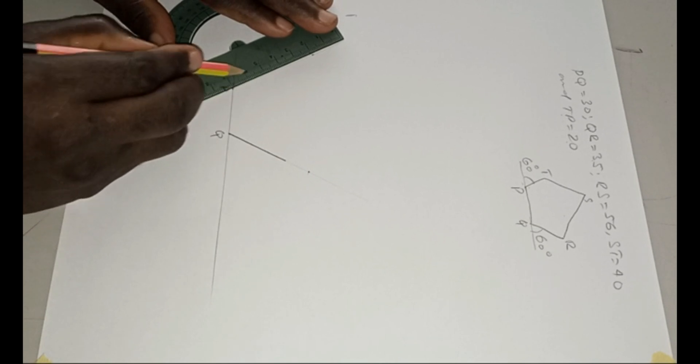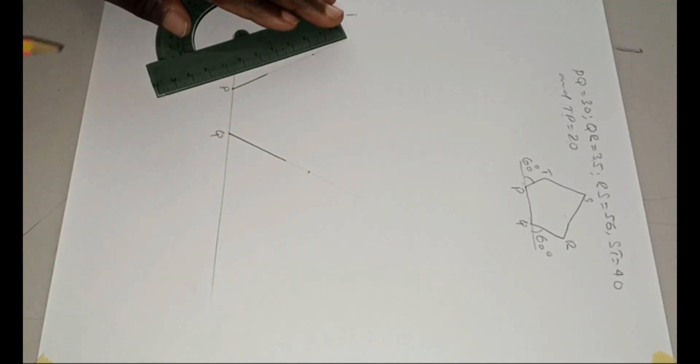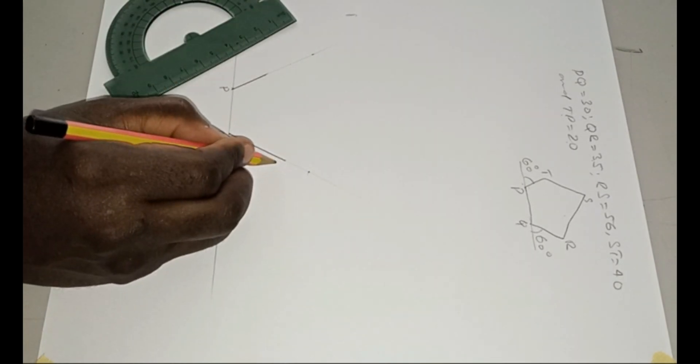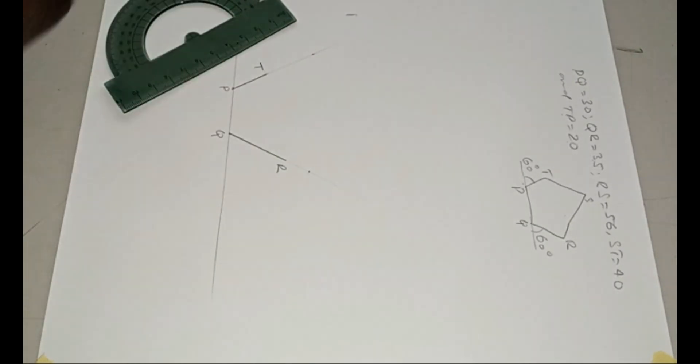So you measure 20, then 20. So stop here. So you can now... Now this is our R and this is our T. So we need to locate S.